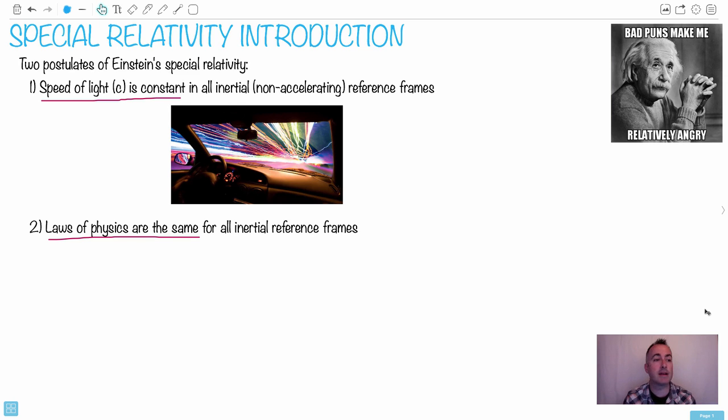One of them is that the speed of light, in other words C, the speed of light here, it's constant in all inertial or non-accelerating reference frames. That doesn't sound like much, but that one right there is probably the most mind-blowing thing. What it really means here, first of all, we have to know that this inertial frame means not accelerating. See, general relativity, that's for accelerating frames, and that gets way more complicated.